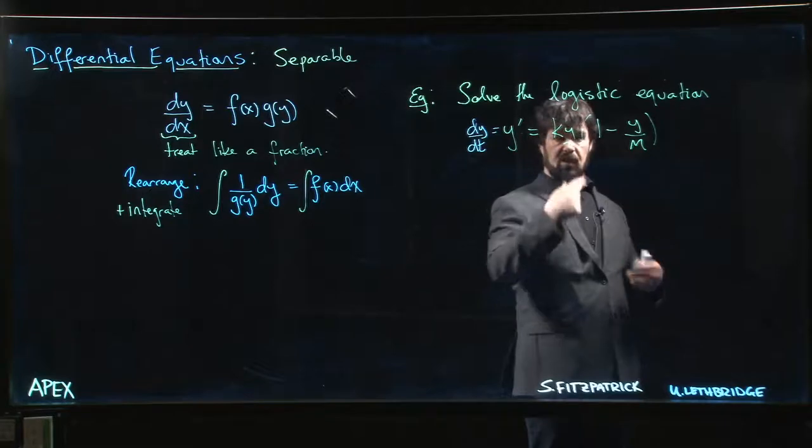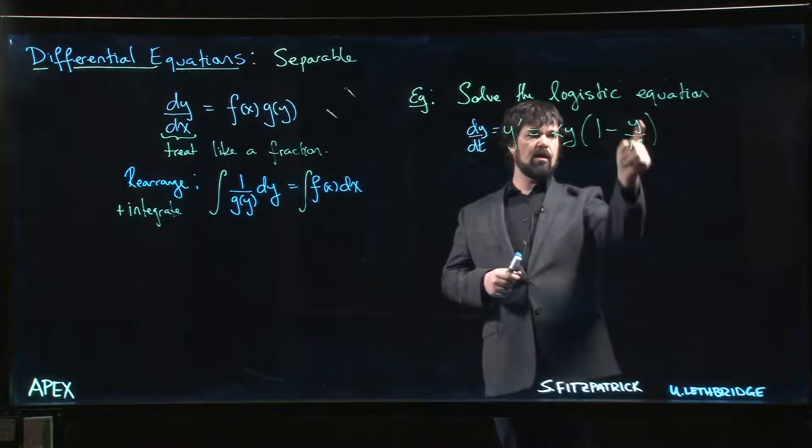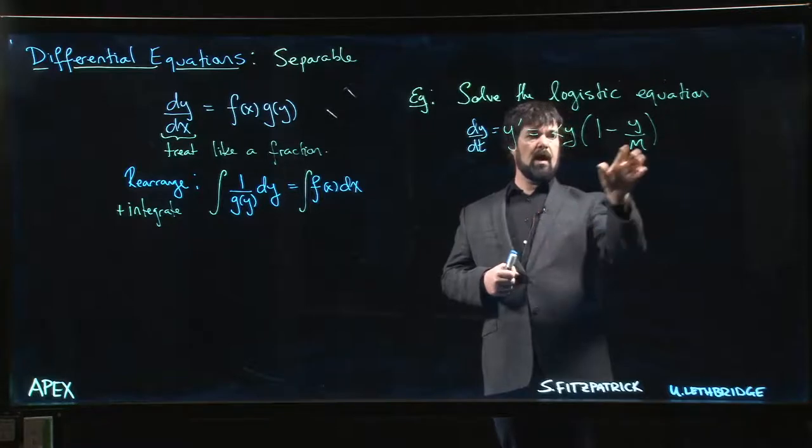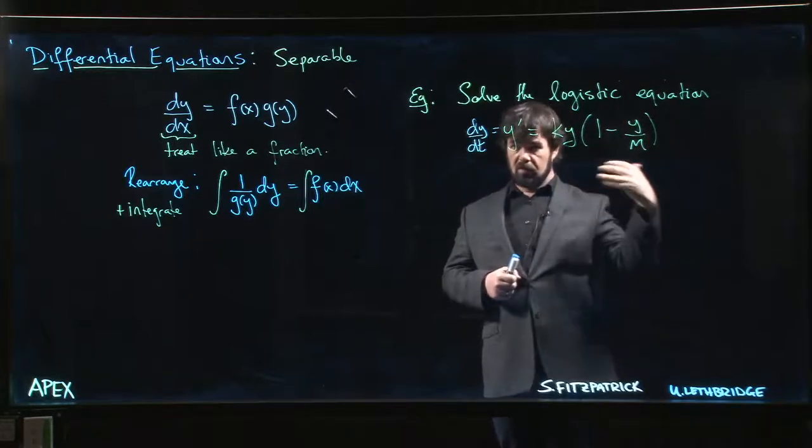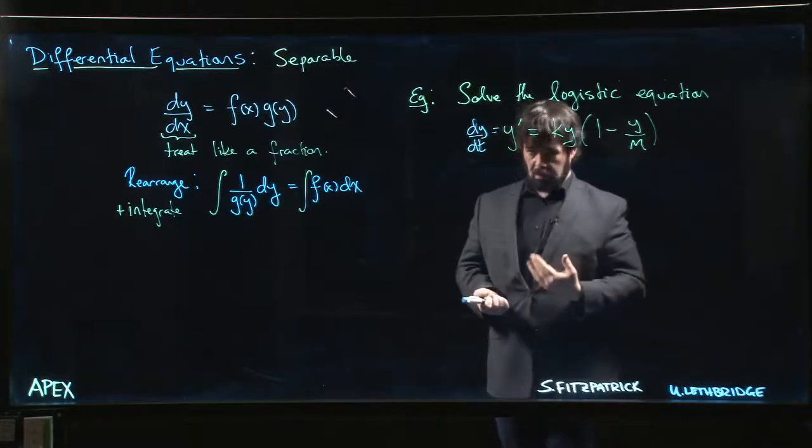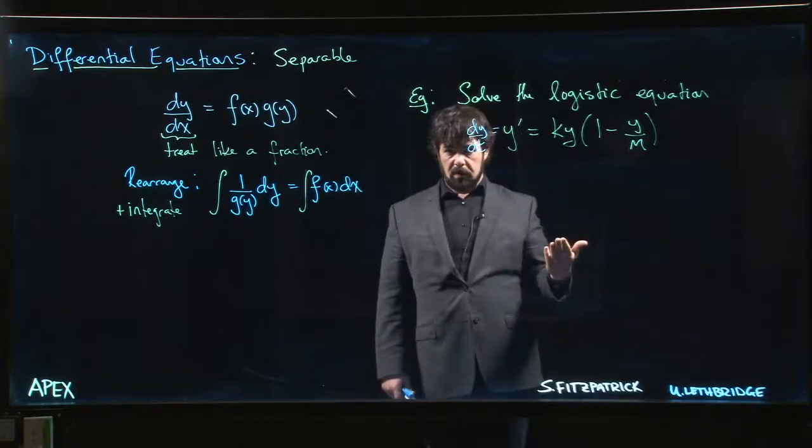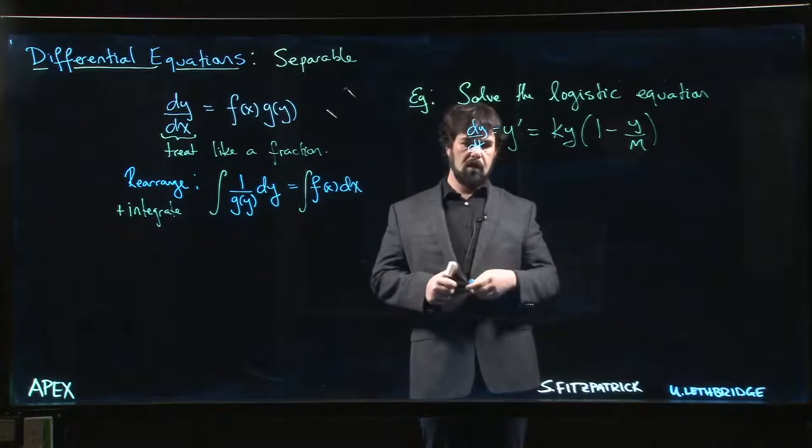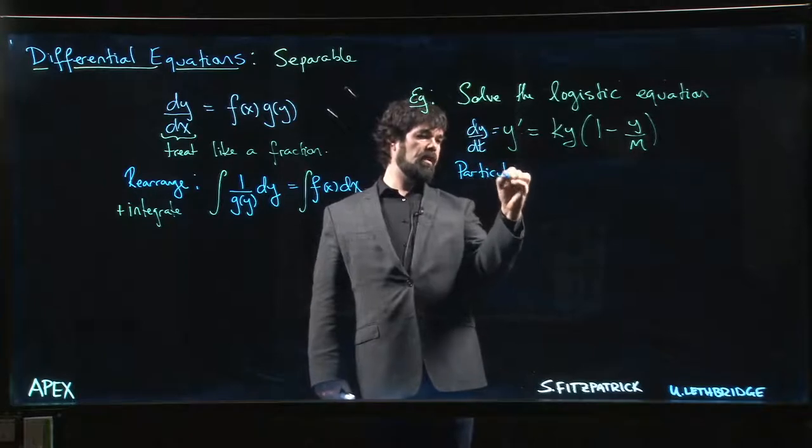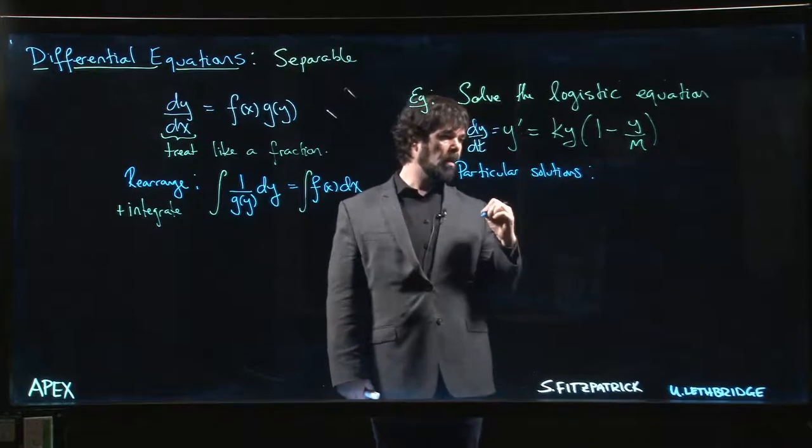But as y gets bigger, gets closer to M, suddenly this factor over here starts mattering more and more. And as y gets closer to M, this gets closer to zero, so your growth rate is slowing down. And if you ever actually reach that maximum, if y is equal to M, well then y prime is zero and your population remains constant. It stays stable at that maximum.